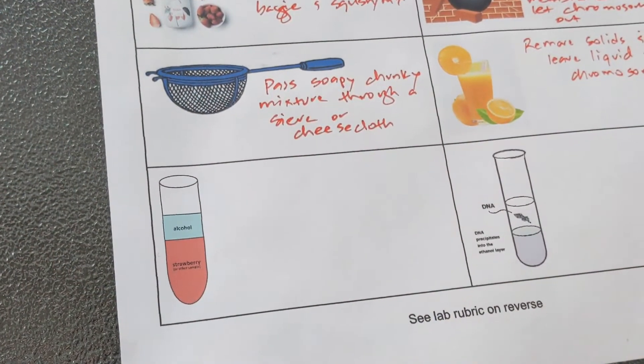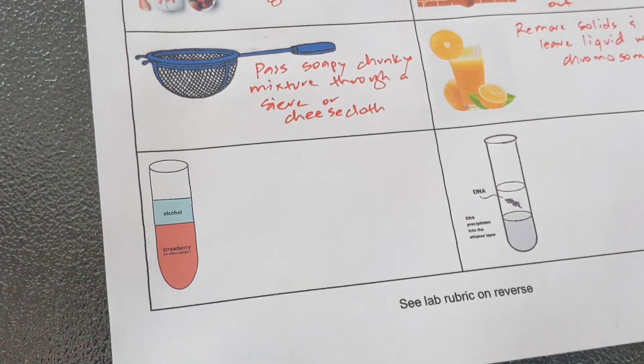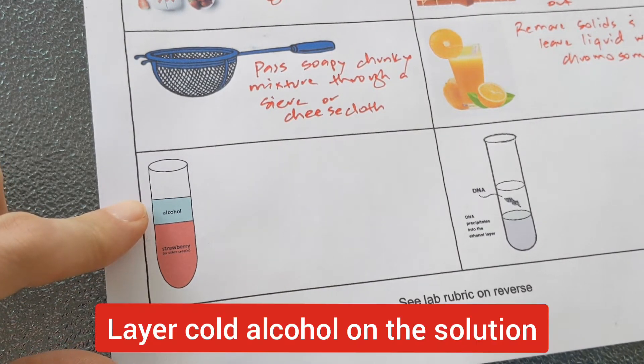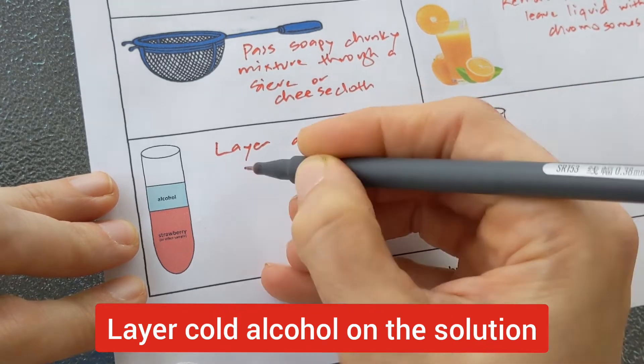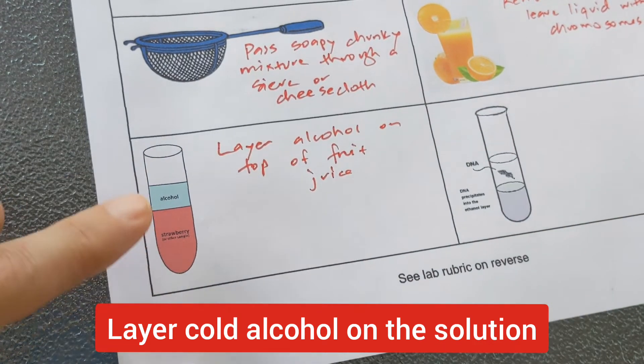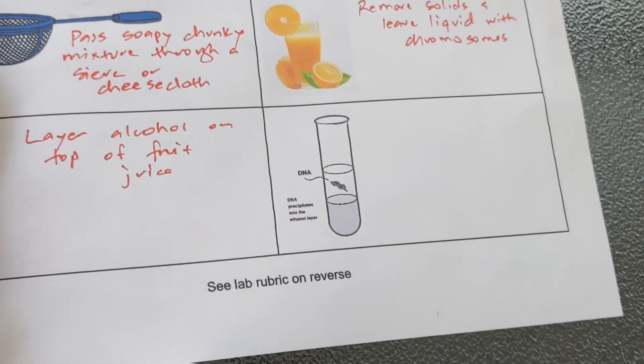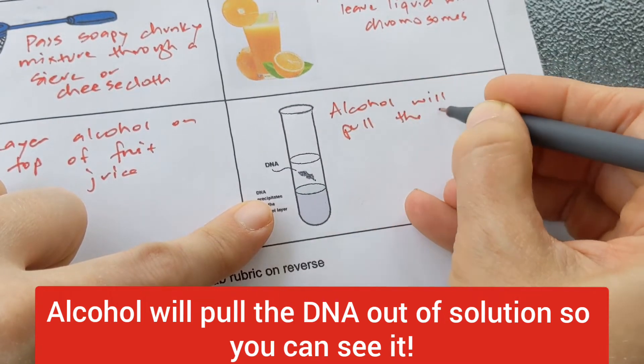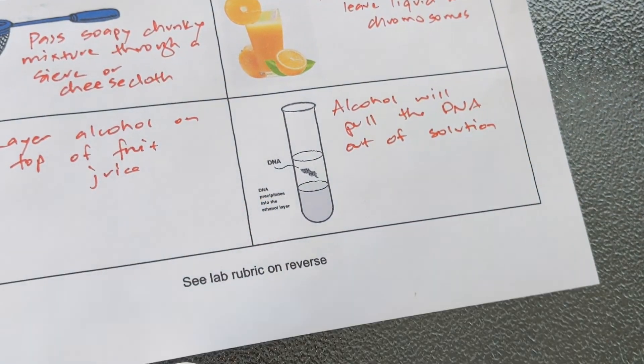The next step does work best if you have something more tube-like. So the narrowest container you can find is great. Test tubes are awesome. But if you don't have that, it also works perfectly fine to do a glass. So the next step is we are going to layer alcohol on top of our liquid solution. Layer alcohol on top of fruit juice. Speaking of which, I bet you could use straight up fruit juice and get this to work. You just have to mix some soap in, shake it up. Somebody try that and let me know how it turns out. And what's going to happen is the alcohol will pull the DNA out of the solution. It'll pull it up so we can see it and it will be floating up in the alcohol layer.